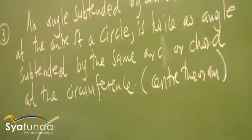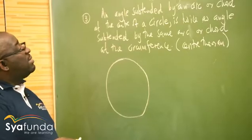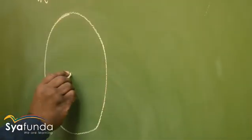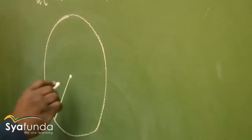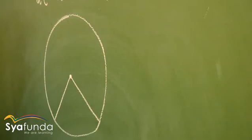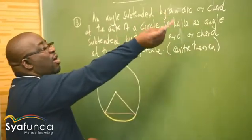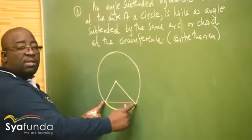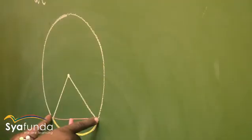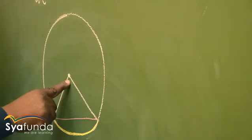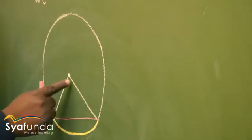It is important that we understand its diagram. If I've got a circle, an angle subtended by — 'subtends' means to form. An angle subtended by an arc or a chord at the center. If this is the center and I've got the angle subtended by this arc, this arc — it might be the arc or the chord. This chord does the same thing as this arc, taking us to the center. So this angle can either be subtended by a chord or an arc at the center of a circle.